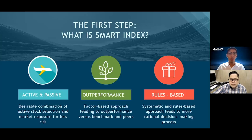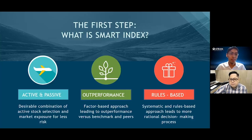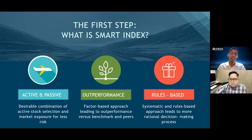Even though companies made it into the index, some will outperform and others will underperform relative to each other. For example, during the pandemic last year, telco companies outperformed property companies. The question is: how do you figure out which ones will outperform? That's what makes this fund smart — a quantitative and rules-based approach.